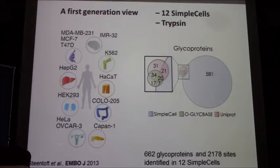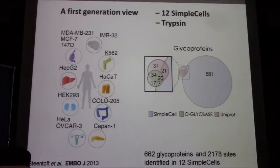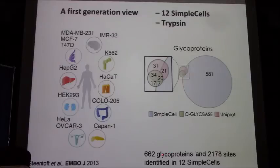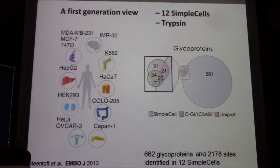We then decided to apply this technology and map 12 different Simple Cells from different organs. At that time we ended up with identification of roughly 600 O-GalNAc glycoproteins and roughly 2,000 O-glycosites. This shows the overlap with what was at that time in the UniProt database and what we discovered — you can see there was a big expansion at that time.